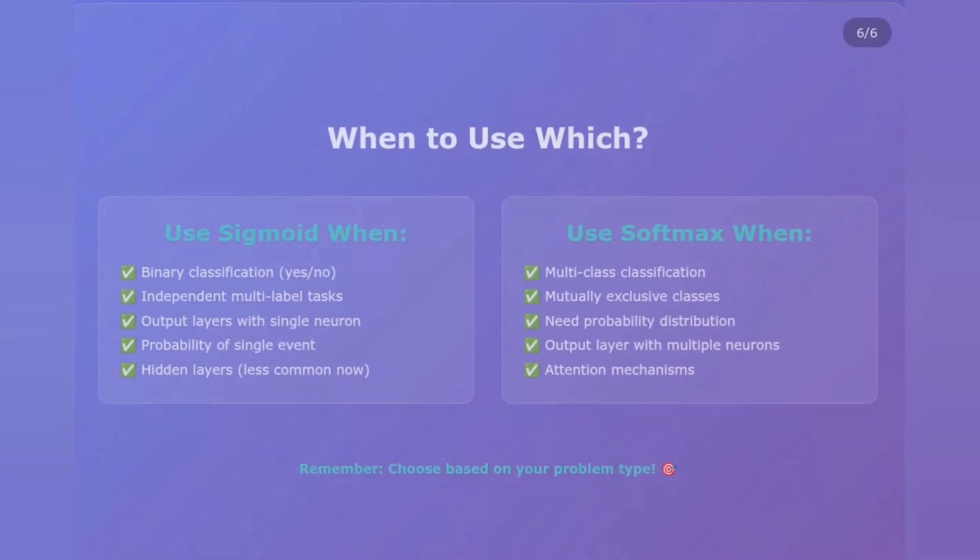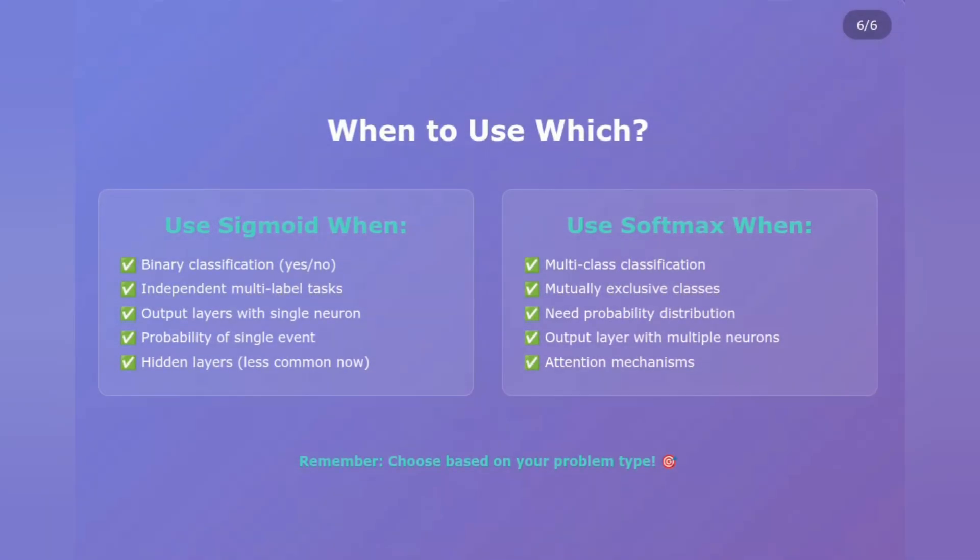Here's the golden rule that will save you hours of debugging. Use Sigmoid when you have binary decisions: email spam or not spam, medical test positive or negative, stock price going up or down — these are perfect Sigmoid scenarios. You can also use it for multi-label problems where multiple things can be true at once. Use Softmax when you have mutually exclusive categories: what's in this image — a cat, dog, or bird? It can only be one. Which word comes next in this sentence? Softmax is your go-to for these winner-takes-all situations.